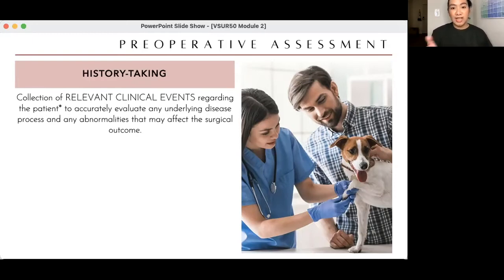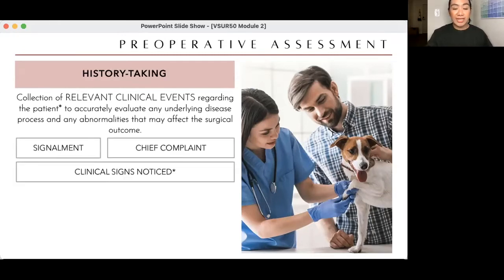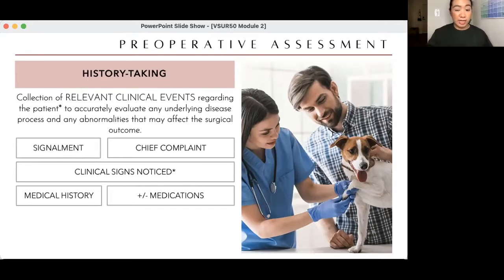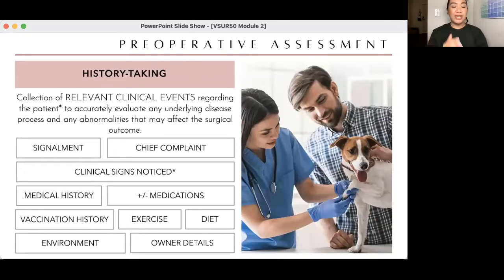Even when you're still in clinics and not yet licensed, you will experience catching clients in a lie. It's up to you how to get correct information. What do we ask during history taking for small animals — and this also applies to large animals? You ask for signalment, chief complaint, clinical signs noticed, medical history, medications given, vaccination history, exercise, diet, environment, and owner details.